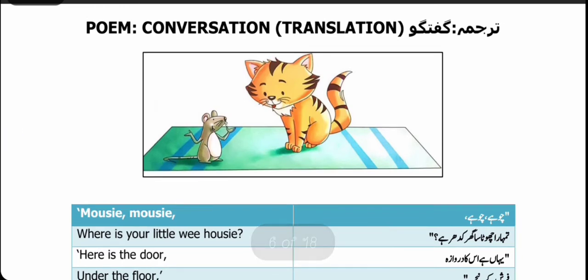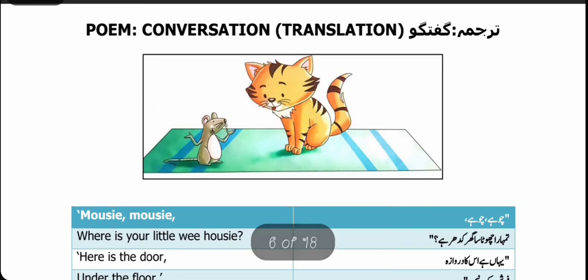Students, what is conversation? Conversation means talking with someone. Also, the talk between two or more people. In this point, the cat is talking to the mouse. You can see that in the picture — here is a cat and a mouse.